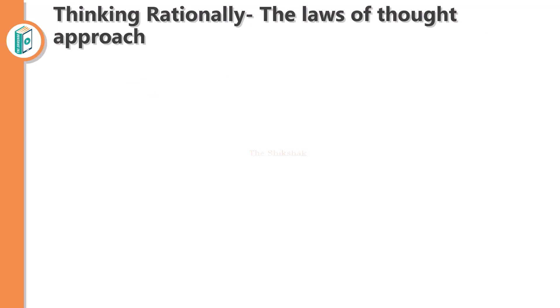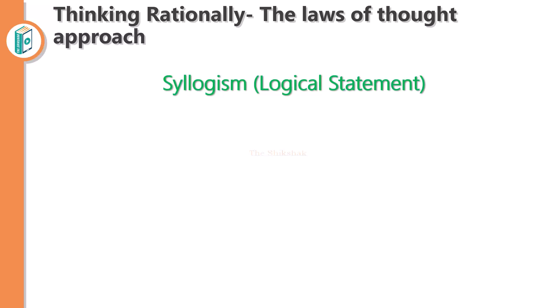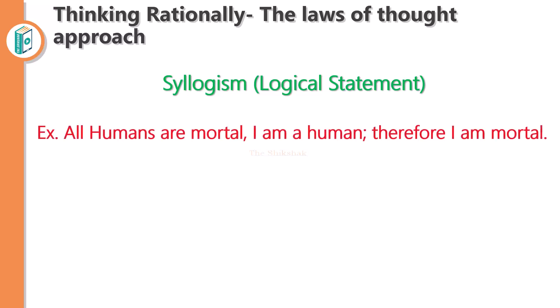The third approach is thinking rationally — the law of thought approach. Here we need to understand one term: syllogism. Syllogism is a kind of logical statement defined by the Greek philosopher Aristotle. We argue with two different sentences to prove a third sentence. For example: all humans are mortal, and I am a human, therefore I am mortal. Humans cannot live forever, and if I am a human, that means I am mortal.